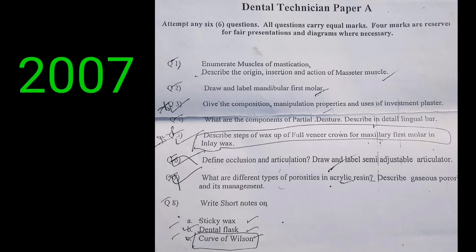Question number five: describe the steps of wax up for a full veneer crown for the maxillary first molar in levels. Question number six: define occlusion and articulation, and draw and label a semi-adjustable articulator. Question number seven: what are the different types of porosity in acrylic resin? Describe gaseous porosity and its management. Question number eight: write short notes on (a) sticky wax uses, (b) dental floss uses, (c) curve of Wilson.